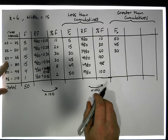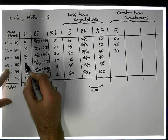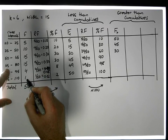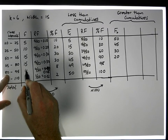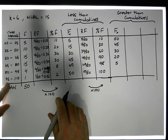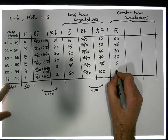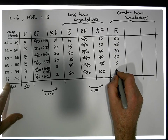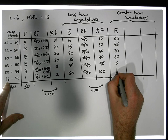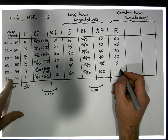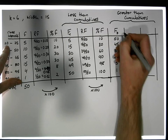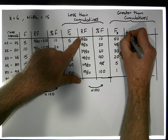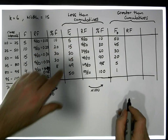How many observations are greater than 65? There's 15, 4, and 1 — a total of 20. How many are greater than 80? There's 4 and 1, giving us 5. How many are greater than 95? There is just 1 observation greater than 95. I should note that this is a strictly less-than cumulative and this is a greater-than or equal-to cumulative.